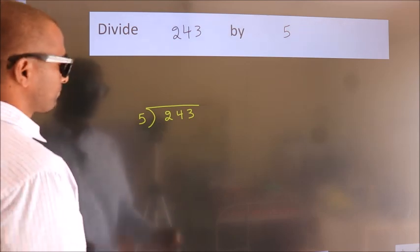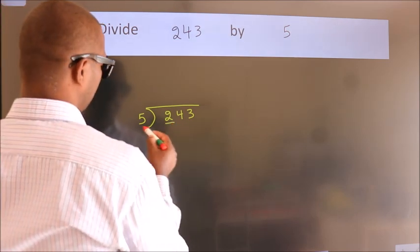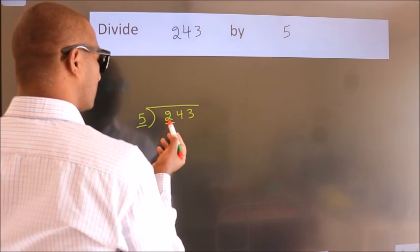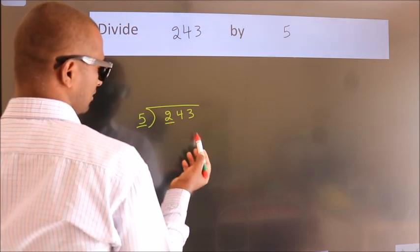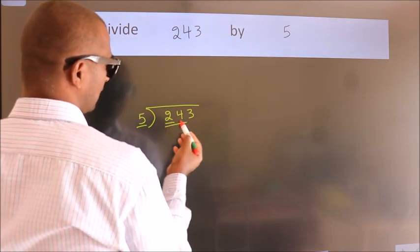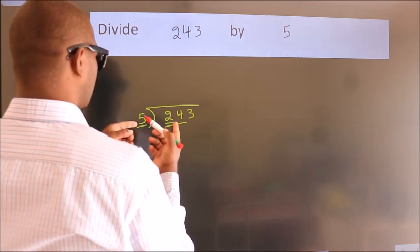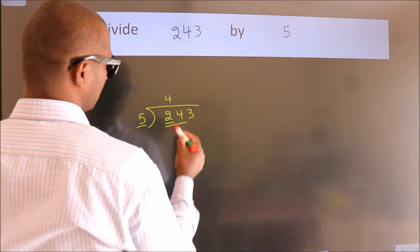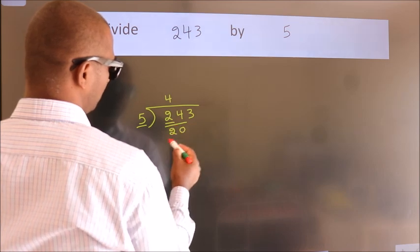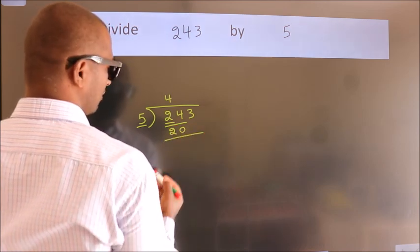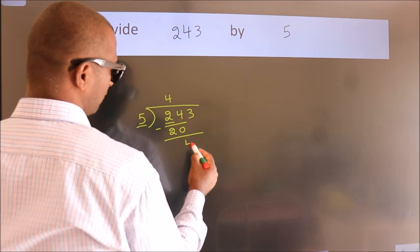Next, here we have 2. Here 5. 2 is smaller than 5, so we should take 2 numbers: 24. A number close to 24 in the 5 table is 5 times 4 is 20. Now we should subtract. We get 4.